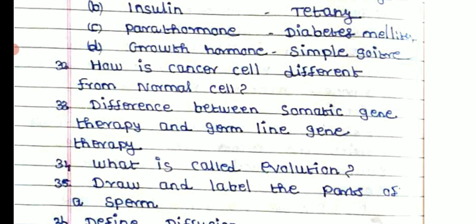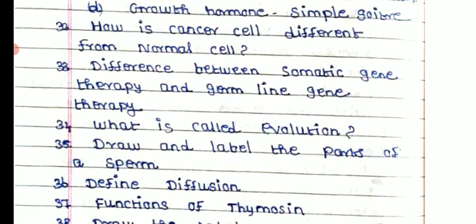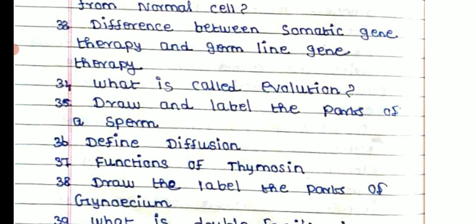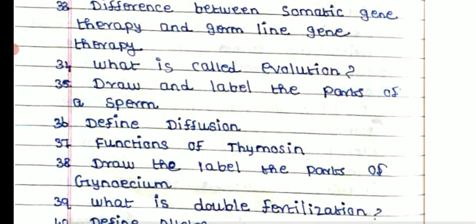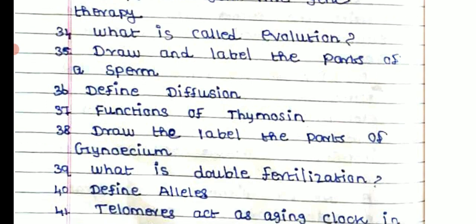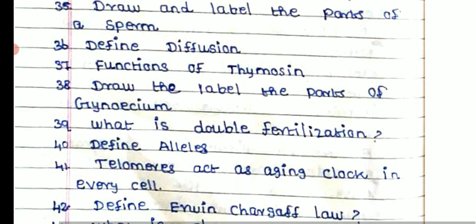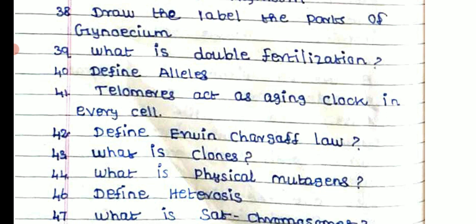How is a cancer cell different from a normal cell? Difference between somatic gene therapy and germline gene therapy. What is evolution? Draw and label the parts of a sperm. Define diffusion. What are the functions of thymosin? Draw and label the parts of a gynoecium.